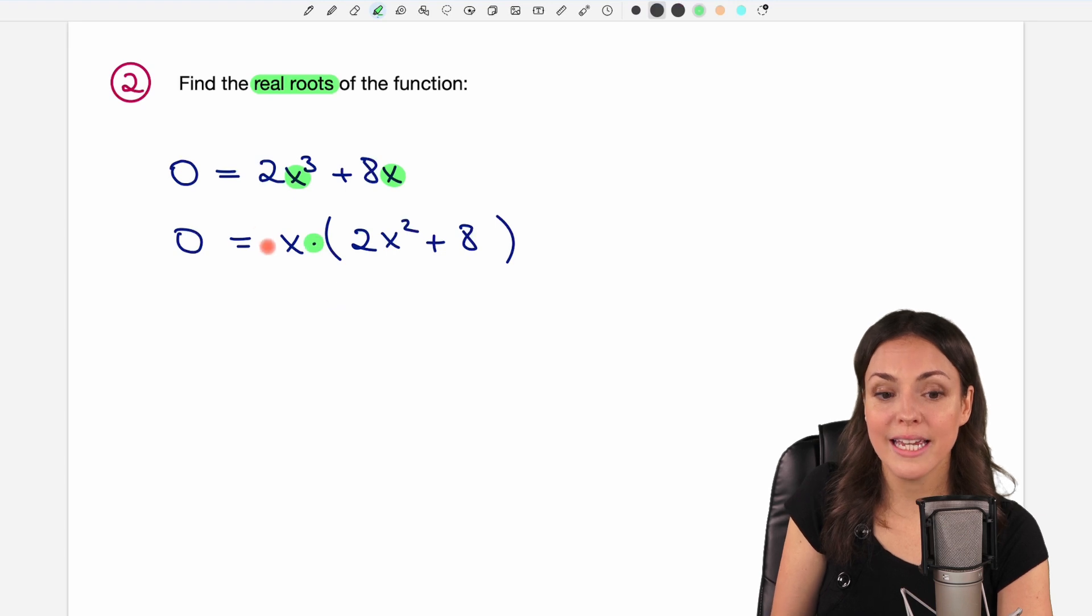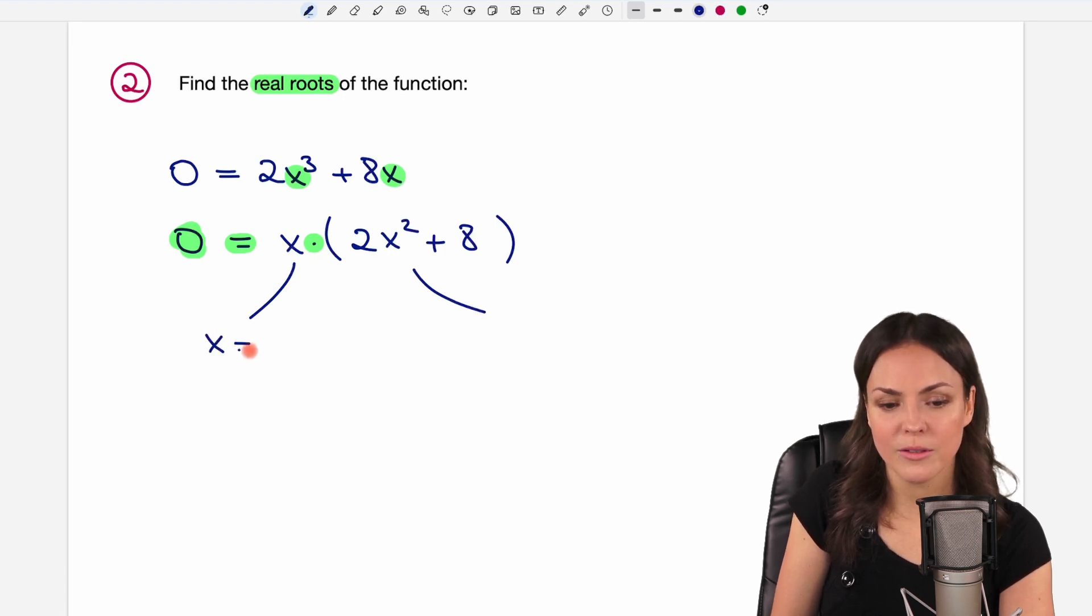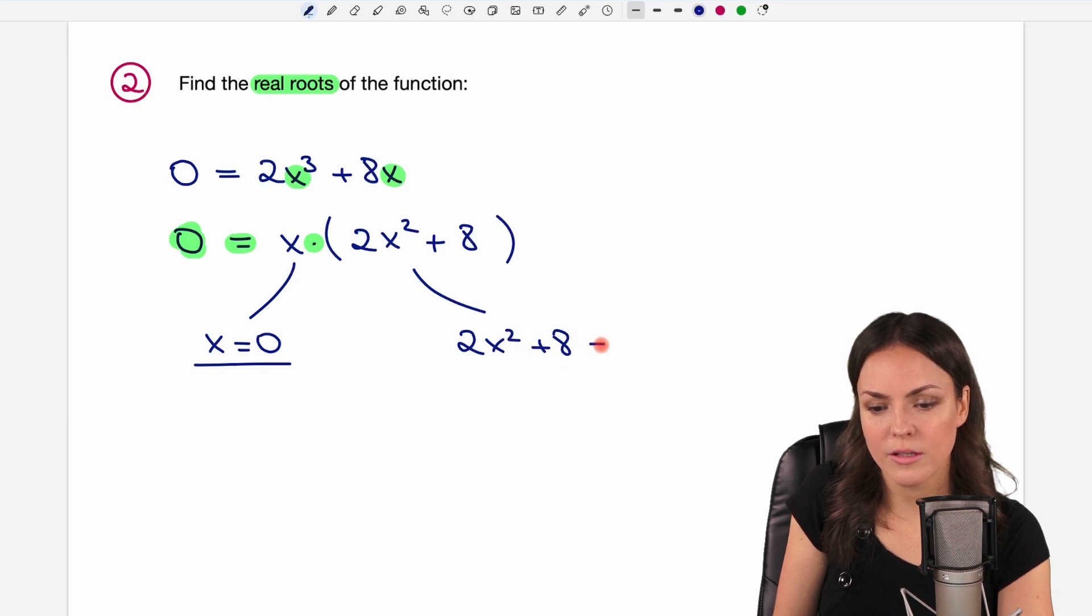Now we have a product again equals zero. Perfect to split this product into two parts. Either x equals zero. Oh, we found a root already. Or the part in the parentheses equals zero.